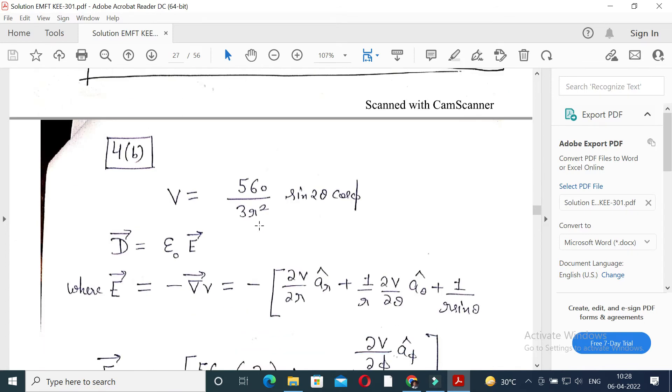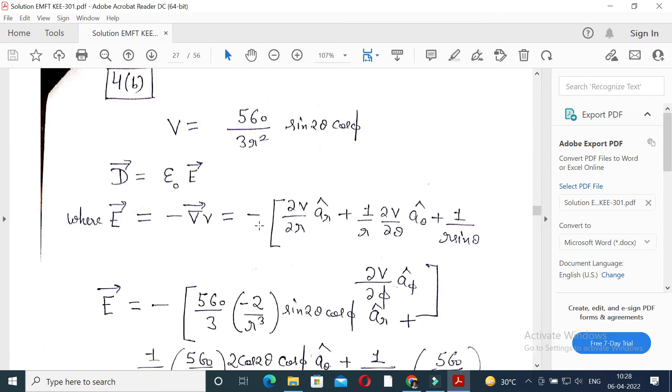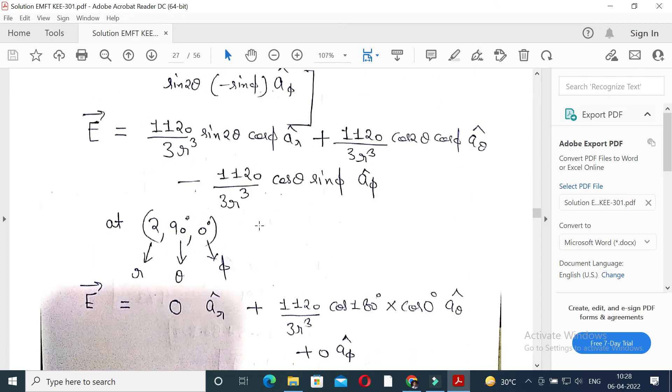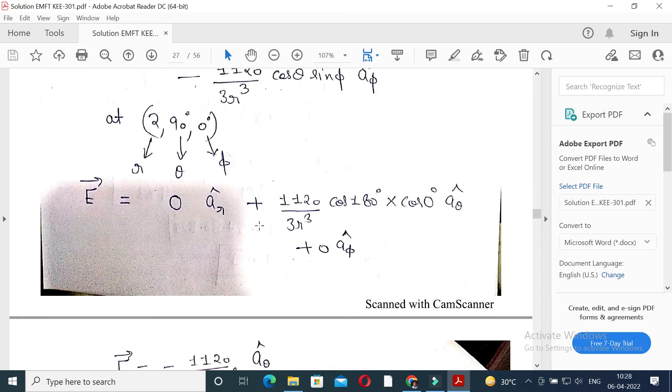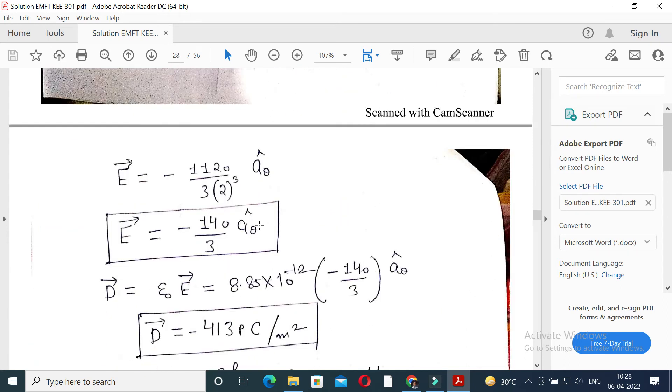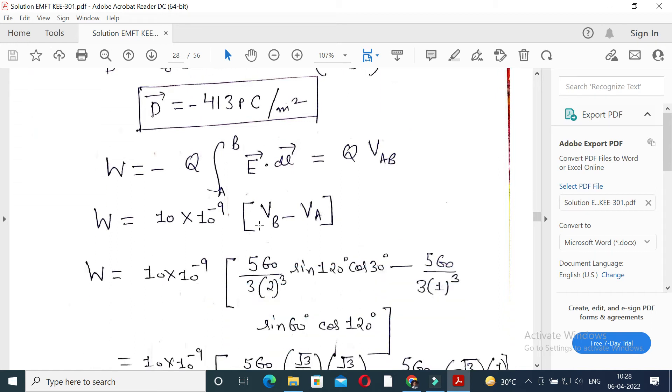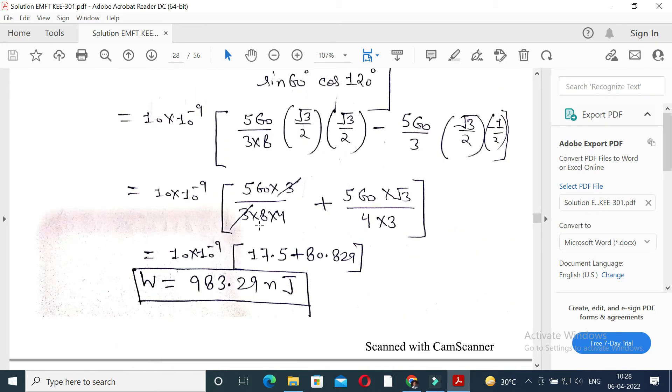Question number 4b is asking D vector. So first of all E is calculated, then we know D is equal to epsilon naught E. Then work done, W is equal to minus Q from A to B, is calculated as 983.29 nanojoule.